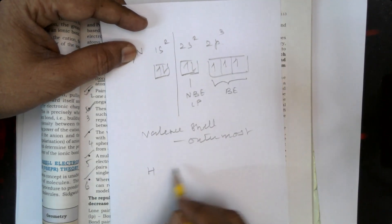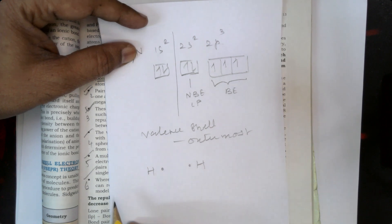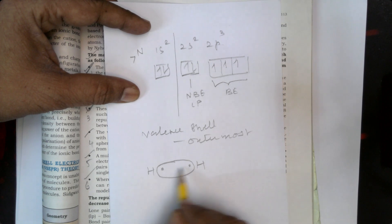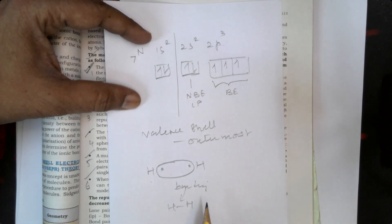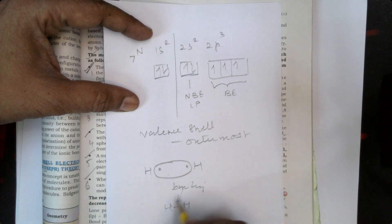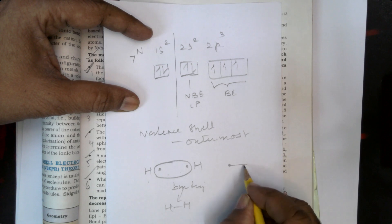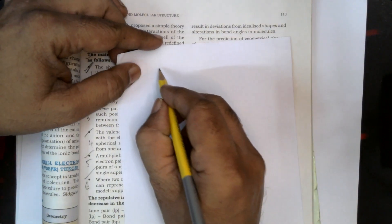For example, consider hydrogen. Hydrogen has one electron. There is a common overlapping between two electrons from two hydrogen atoms, and that results in bonding, represented as H–H. For the formation of a bond, a minimum of two electrons are required.